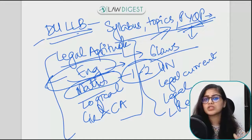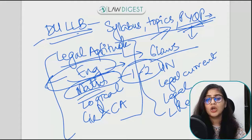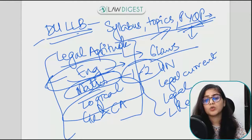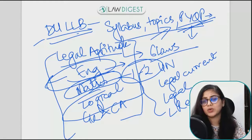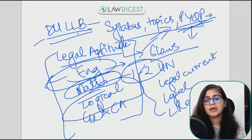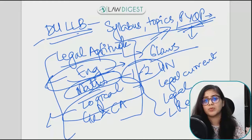Maths is basic — your 6th to 10th elementary mathematics. For Logical Reasoning, questions come in the form of puzzles, Venn diagrams, syllogism, and family or seating arrangement. These are the basic logical reasoning question types, and you have to understand the approach to how to solve these questions.